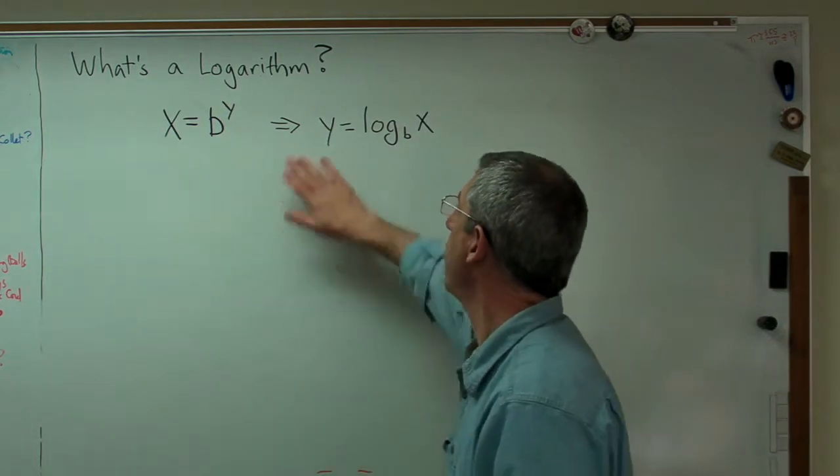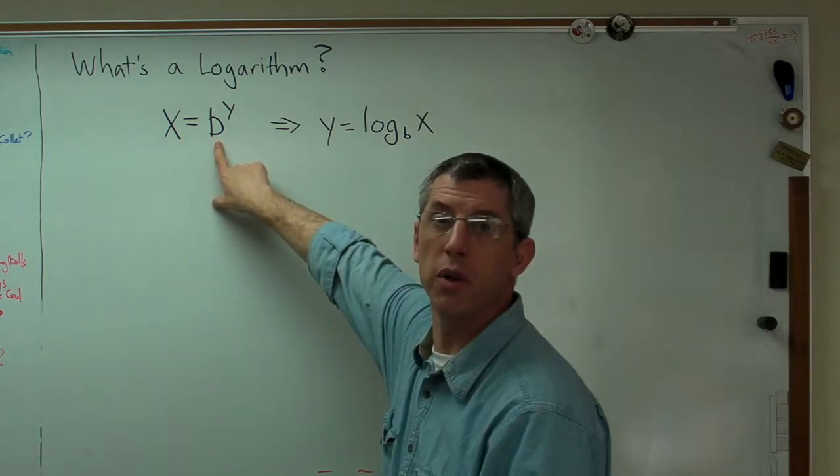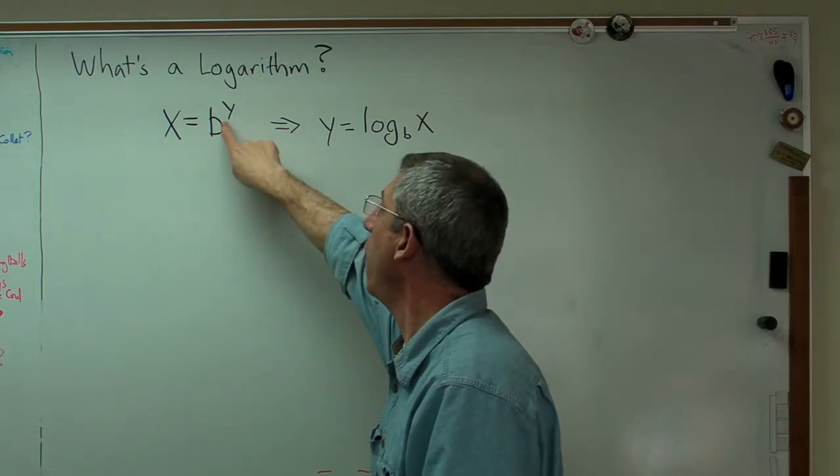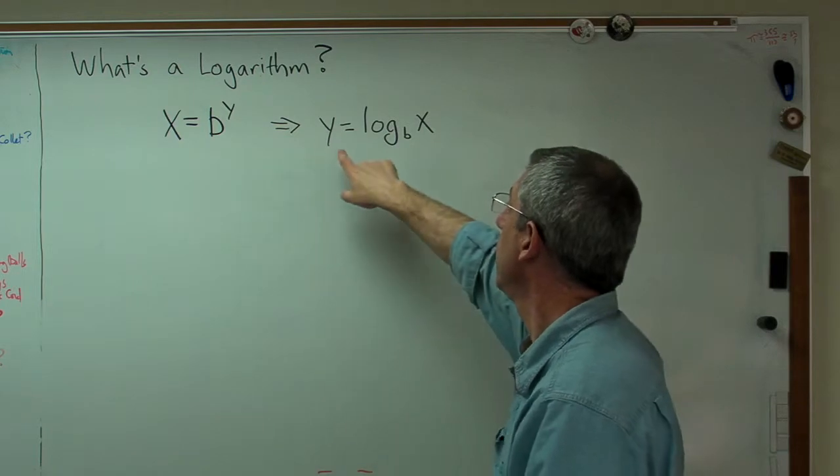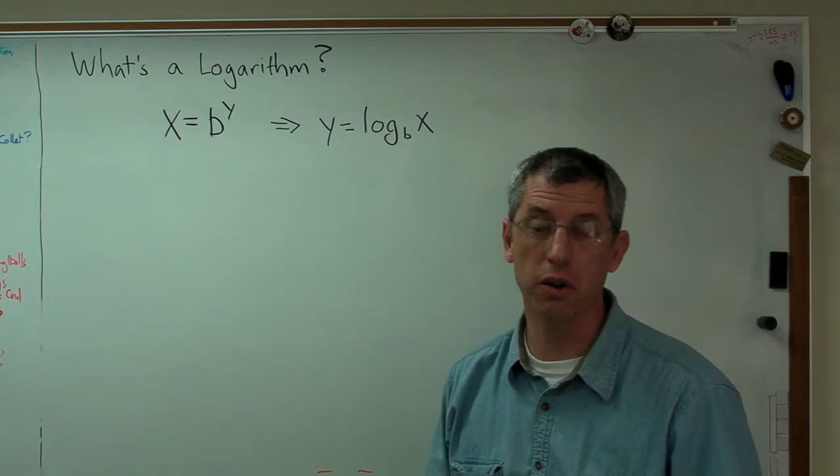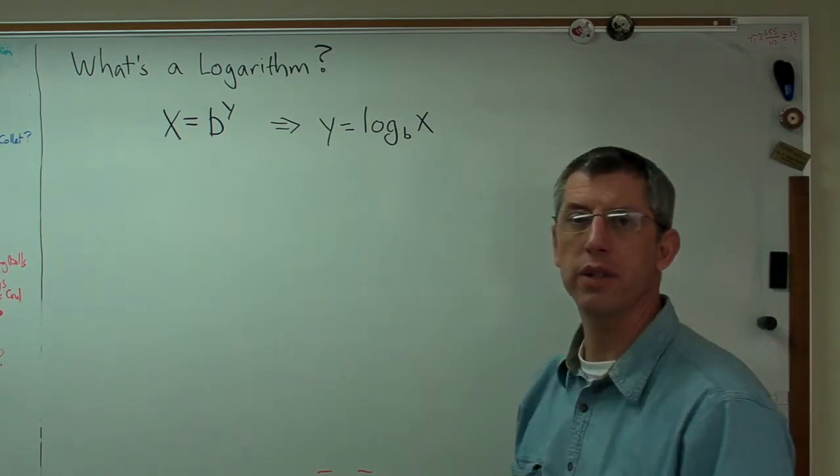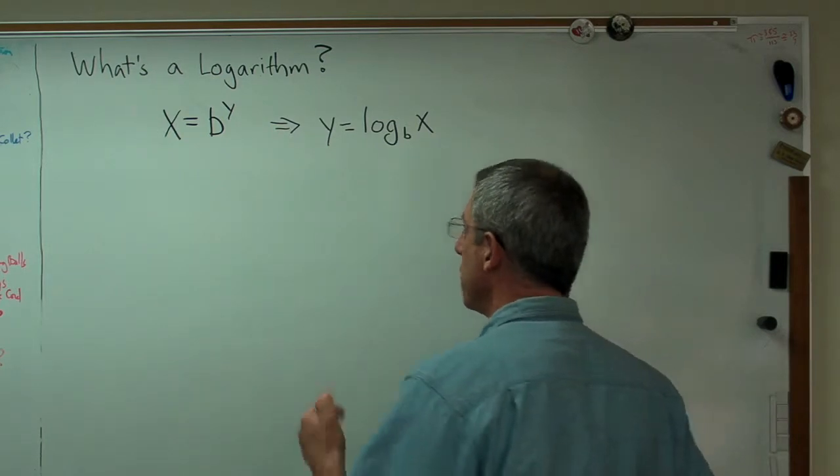Here's the mathematical definition you always see of logarithms. There's this number b, which we call the base. Take the base to some power of y and you get this number x. And if you want to know what y is, you take the log base b of x. Now that's clearly correct, but it's a little dry. I have a hard time working through that. So let me show you some examples.